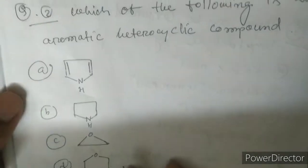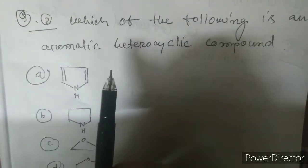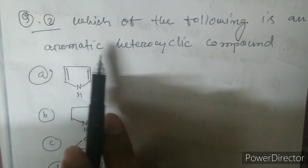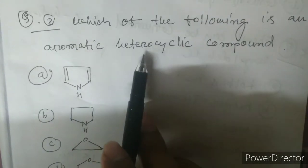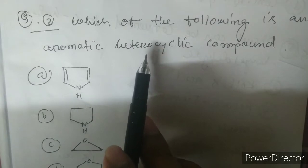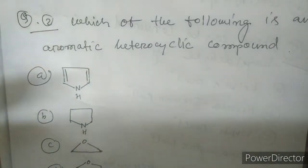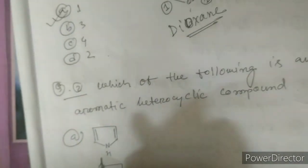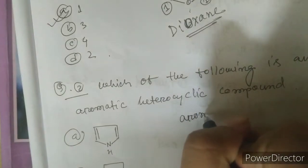Question two: which of the following is an aromatic heterocyclic compound? First you need to know what an aromatic compound is, and also the term heterocyclic compound. A heterocyclic compound is any cyclic compound where a heteroatom is present — like oxygen, nitrogen, or sulfur. Now let's try to find out which one is aromatic.